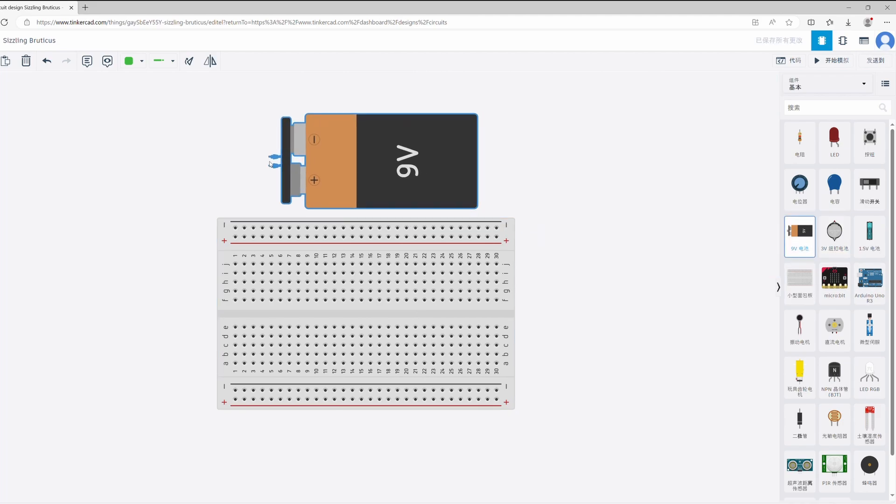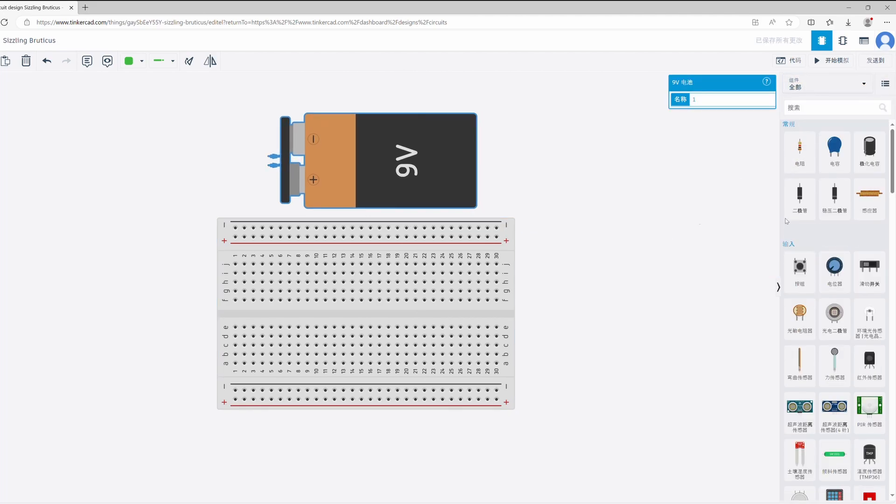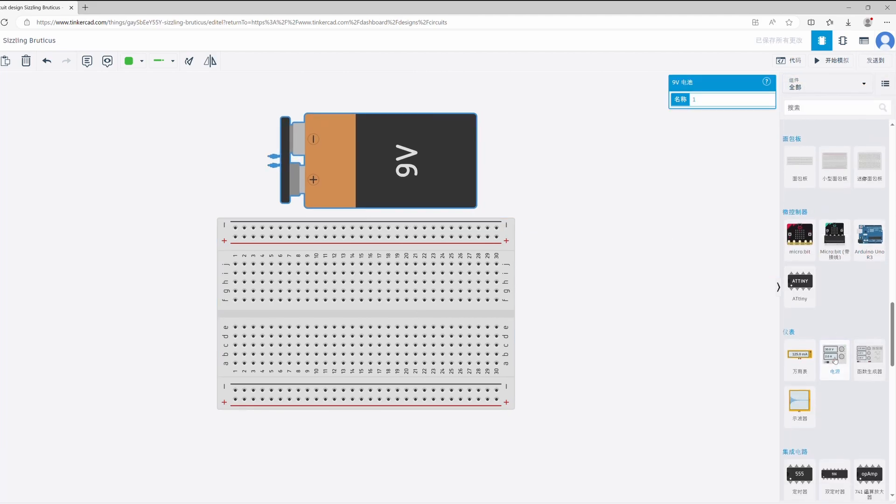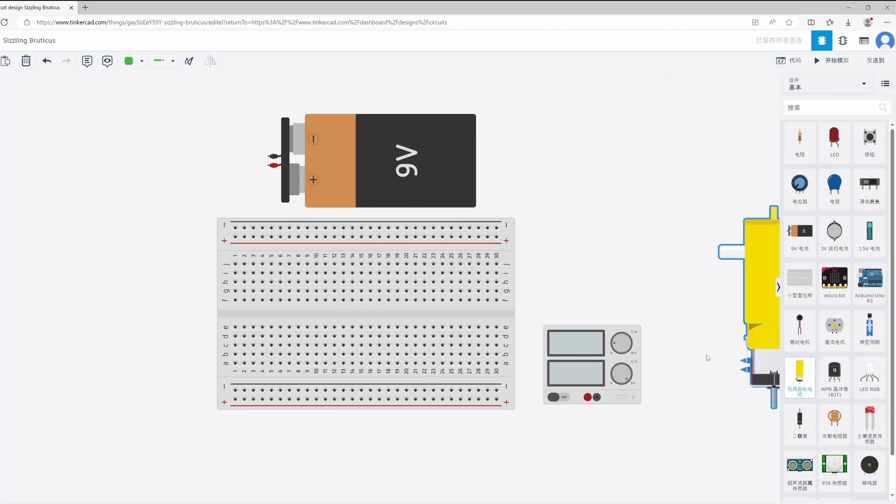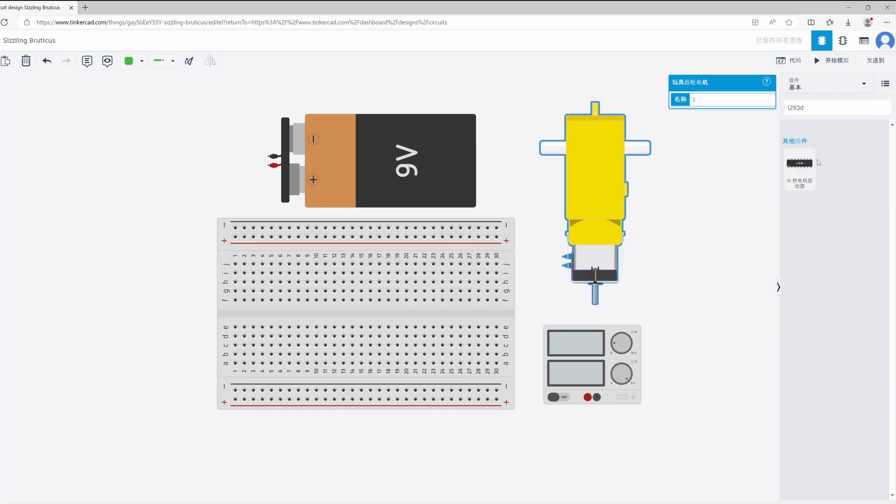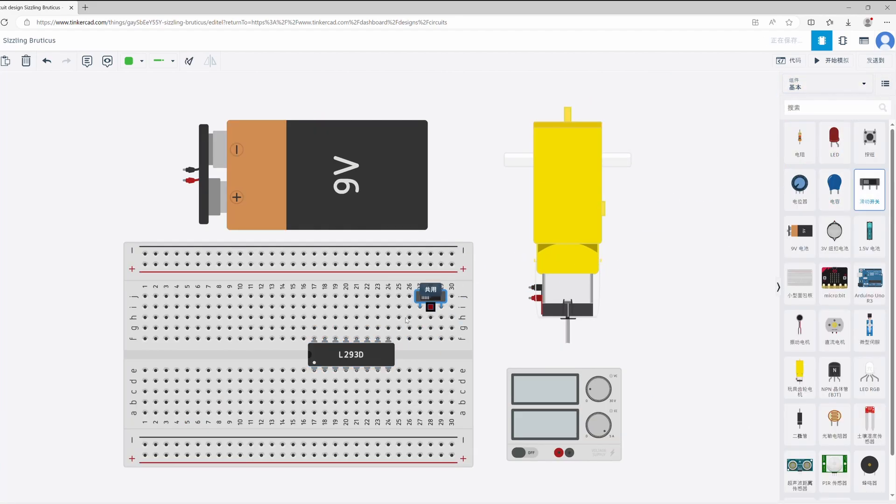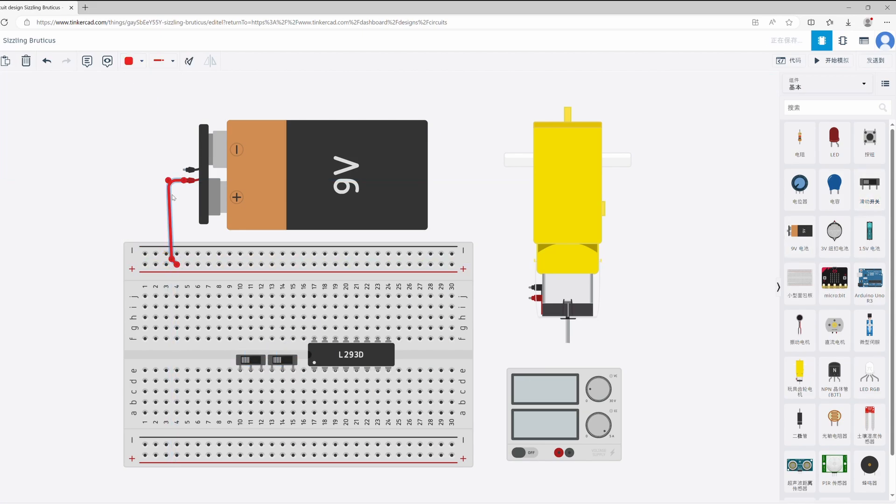Drag a breadboard, a 9V battery, a motor, a 5V power supply, an L293D, and two switches from the component library into the workspace.